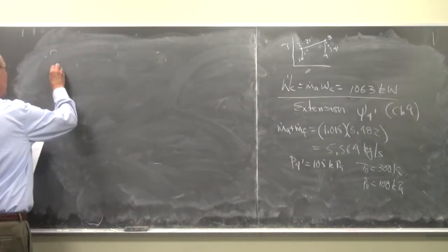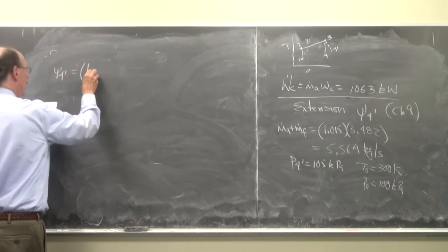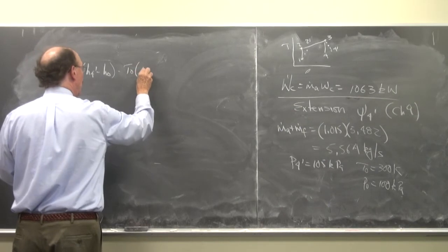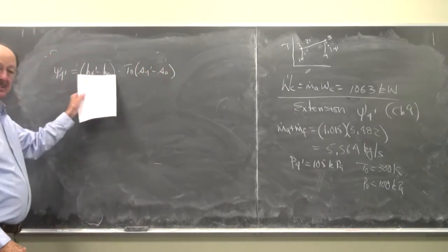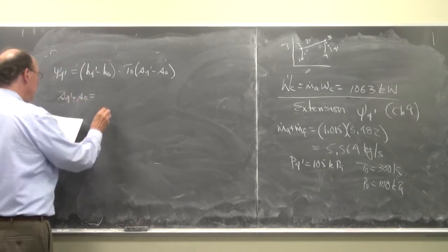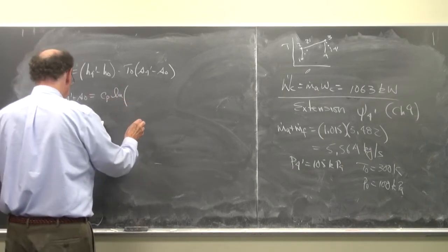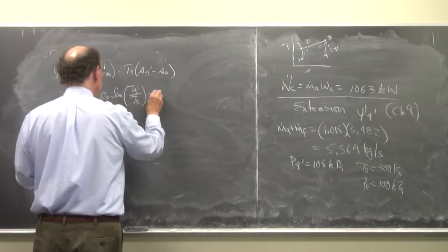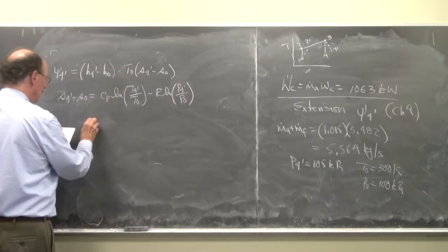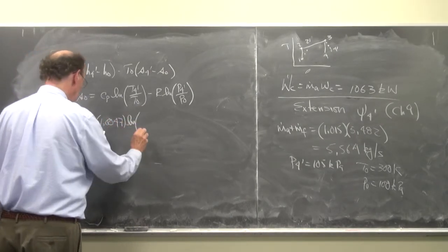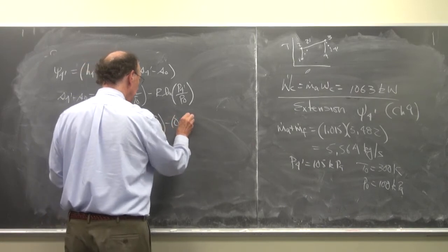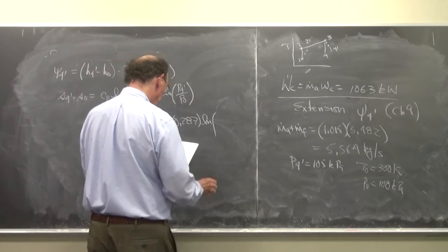And omega 4 prime is equal to H4 prime minus H0 minus T0 times S4 prime minus S0. We know this is Cp delta T. Let's find S4 prime minus S0. So this is Cp times the log of T4 prime over T0 minus R times the log of P4 prime over P0.